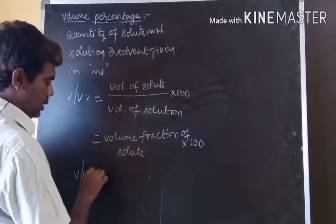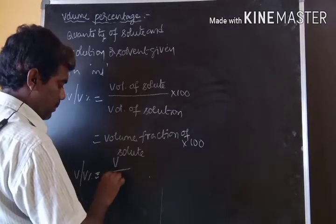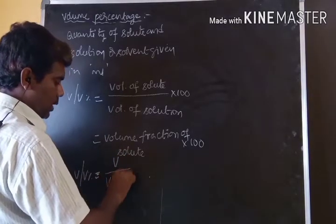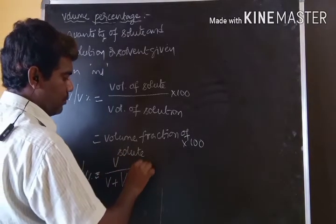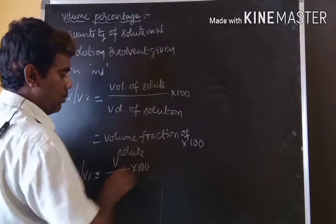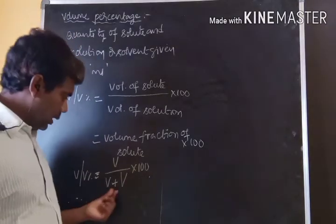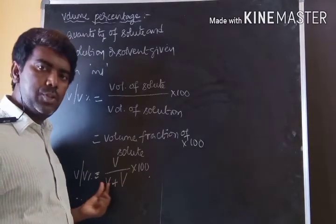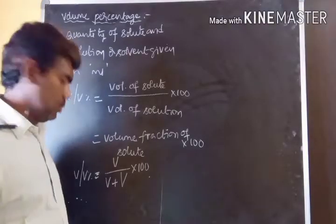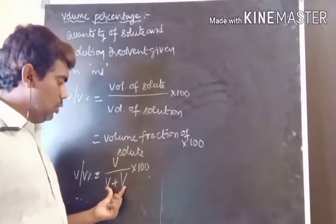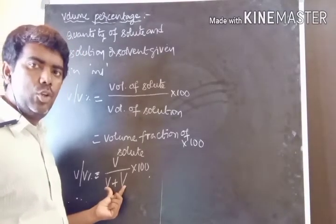The formula is: volume percentage equals volume of solute divided by (volume of solute plus volume of solvent), into 100. Here, capital V is the volume of solvent, and small v is the volume of solute. Together, solute plus solvent makes the solution.